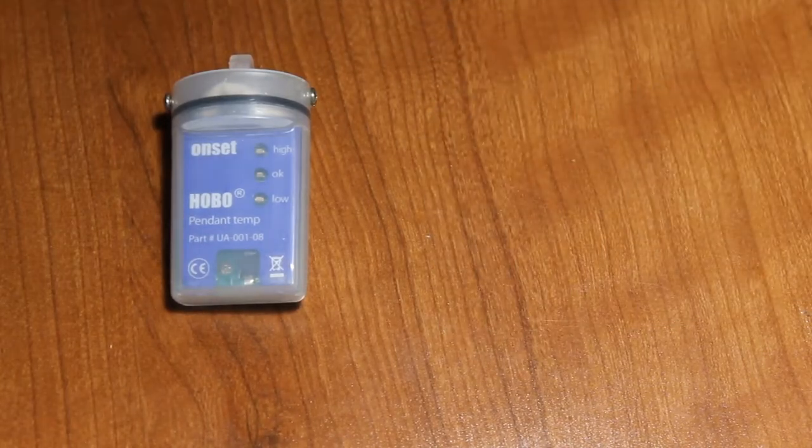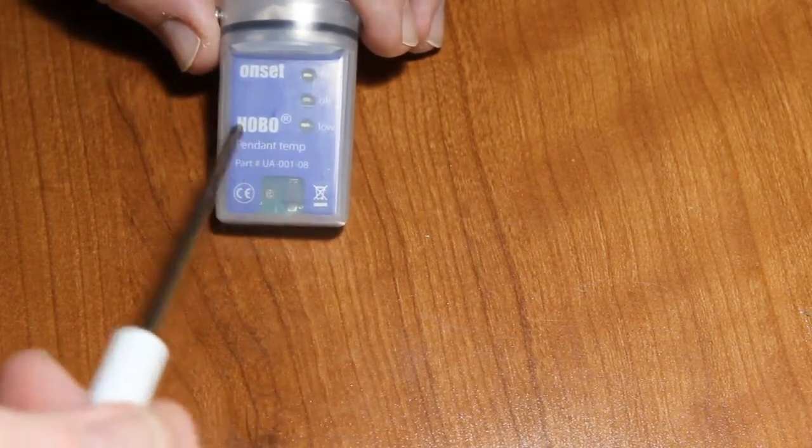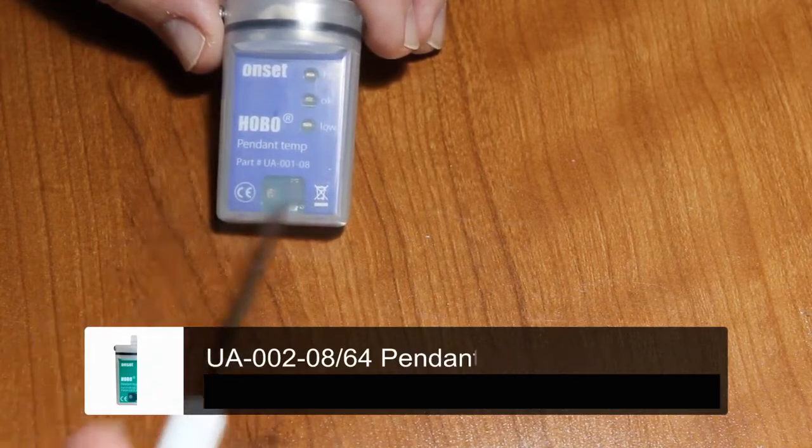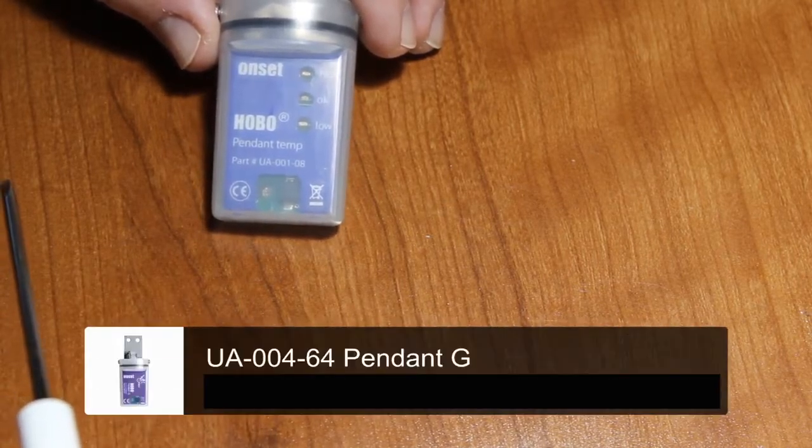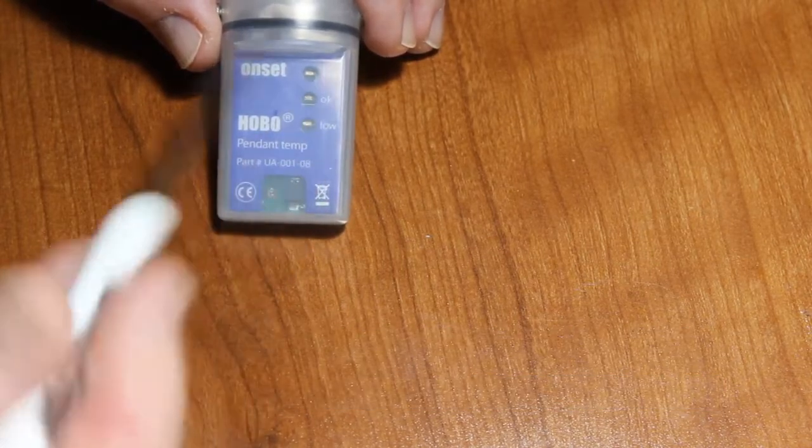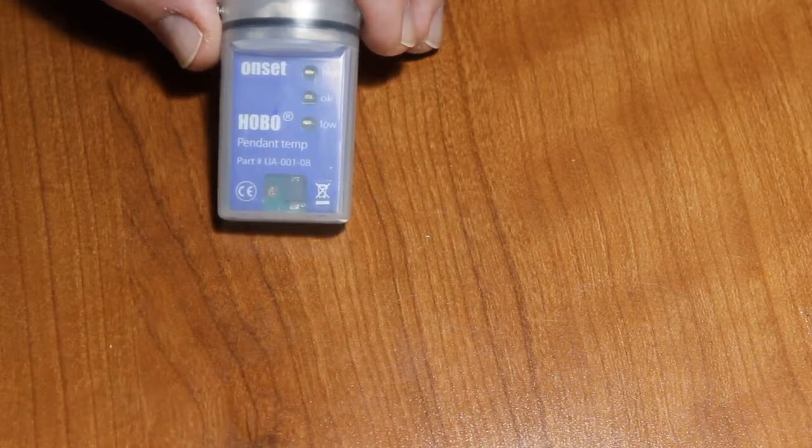Let's start with the temp logger. There is another model of this, there are actually two others: the pendant temp light which has a green label and the pendant G which has a purple label. The battery replacement would be similar in those as this temp only.